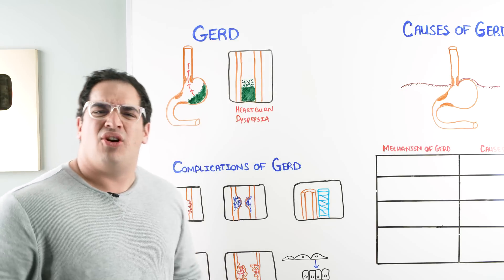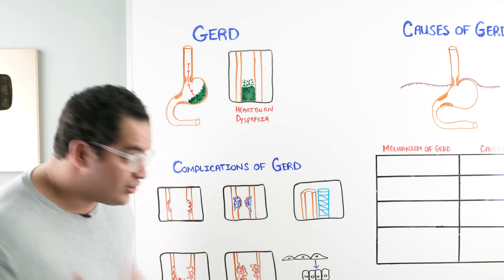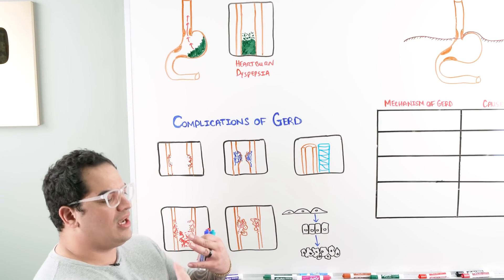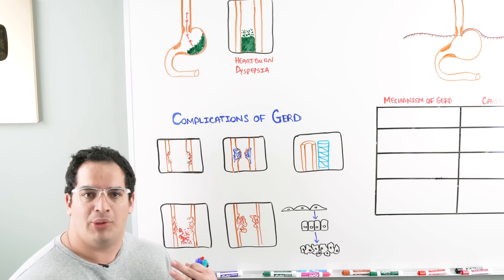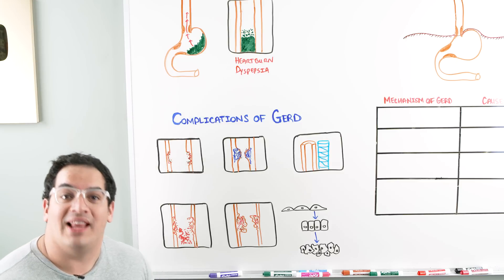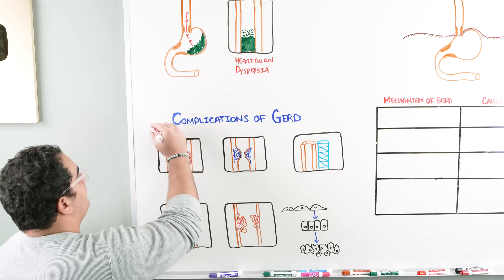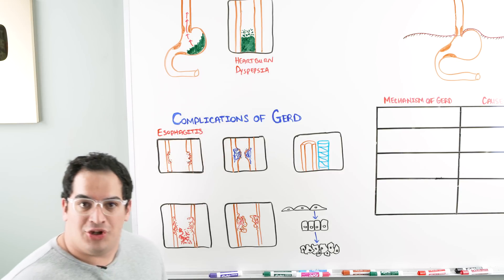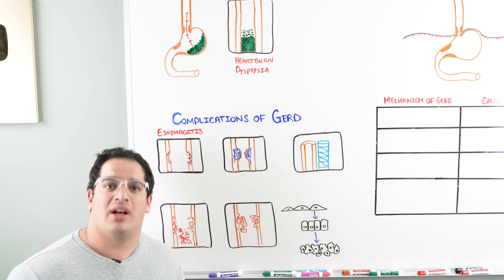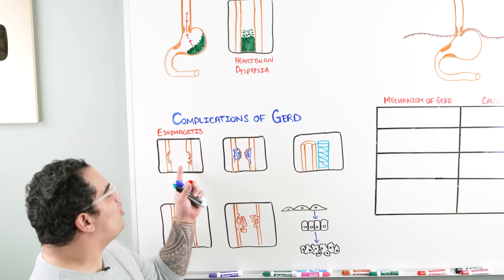What are some of the complications associated with gastroesophageal reflux disease? The hydrochloric acid coming up into the esophagus can really inflame the esophagus and start ulcerating it, leading to esophagitis. Additionally, with esophagitis, patients can present with odynophagia — a lot of pain with swallowing.